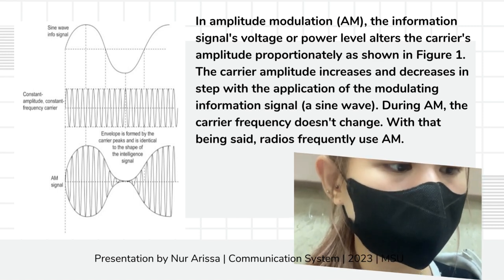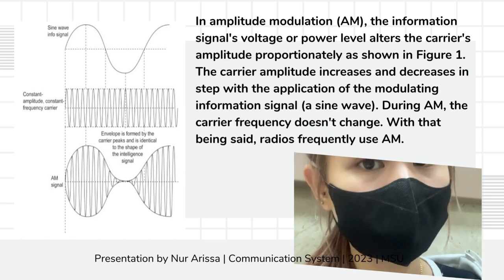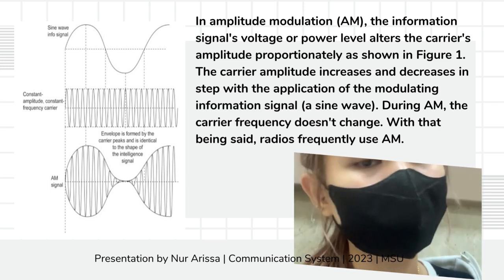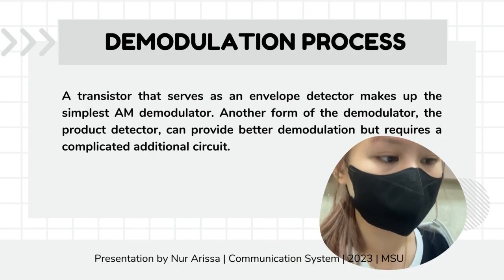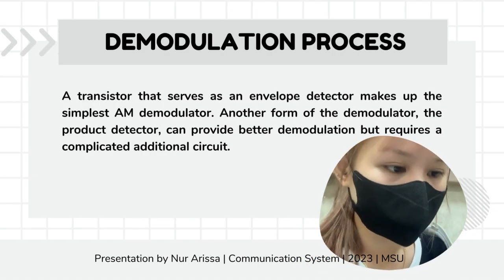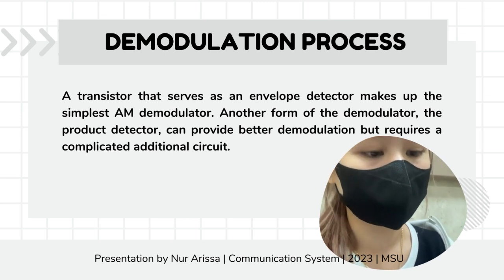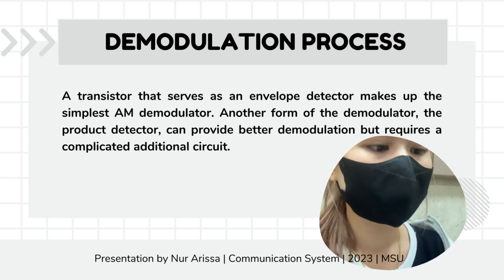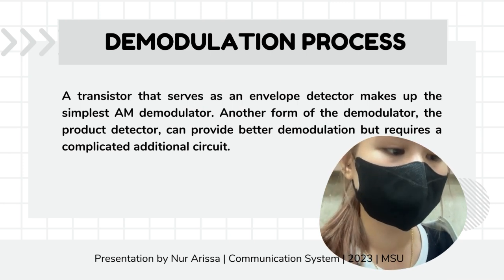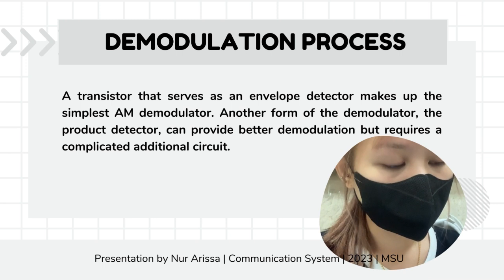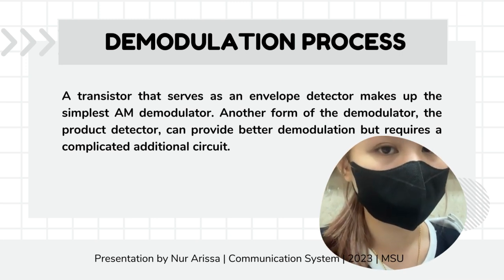During AM, the carrier frequency doesn't change, and radios frequently use amplitude modulation. For the demodulation process, a transistor used as an envelope detector makes up the simplest AM demodulator. Another form, the product detector, can provide better demodulation but requires a more complicated additional circuit.